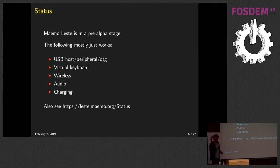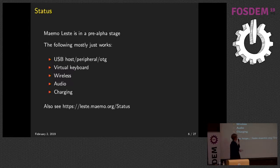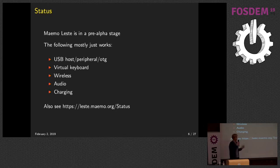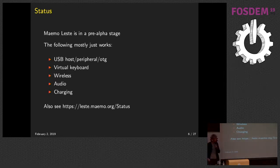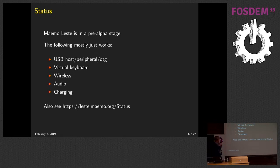We're still in the pre-alpha stage, but for several devices the following already just works. If the device supports host mode, USB host mode on-the-go works; otherwise it's mostly peripheral. We have a working virtual keyboard. There's a UI for wireless that just works. Audio works most of the time, and charging also. Average battery life on the N900 is about 17 hours, which is not very good, but there's a lot we can improve. For more software status, you can see the wiki page.